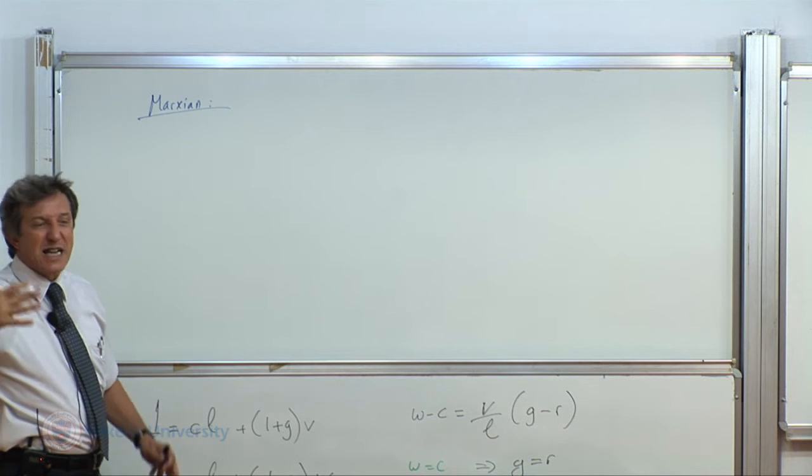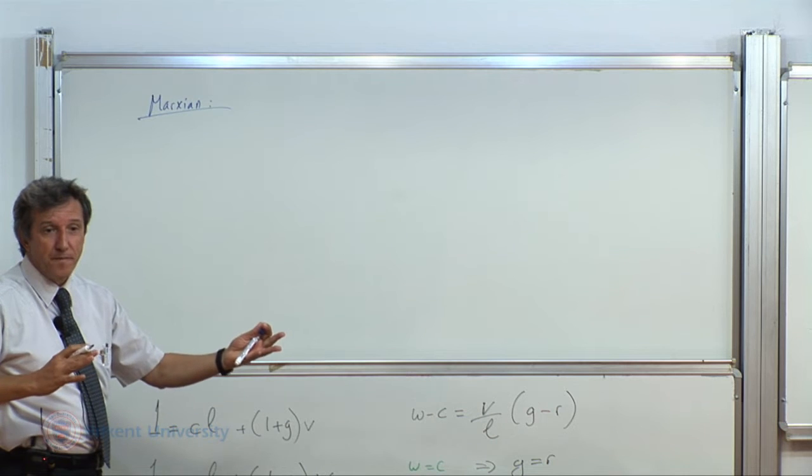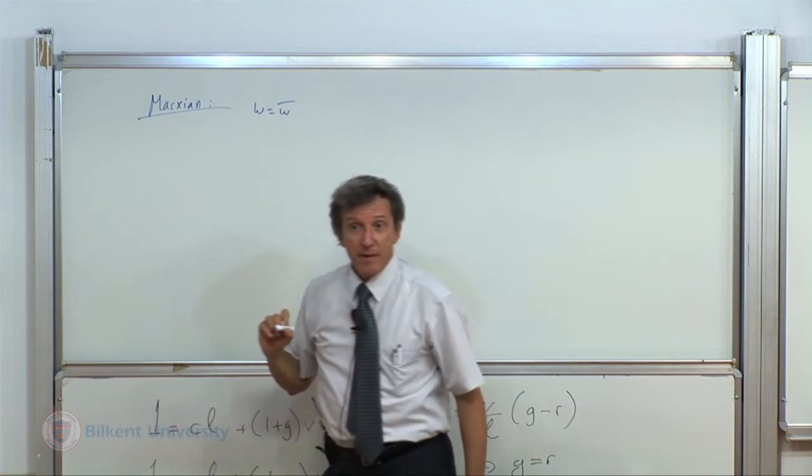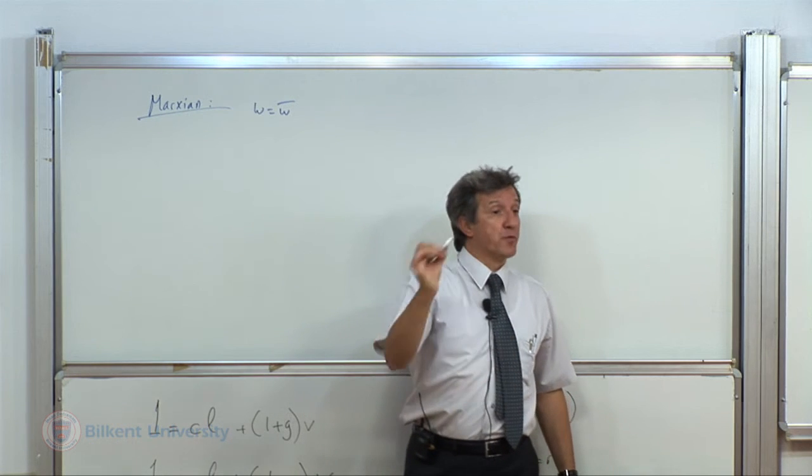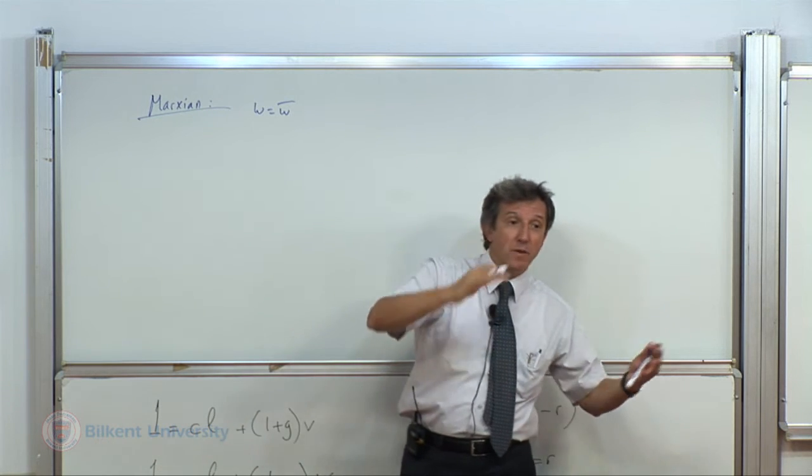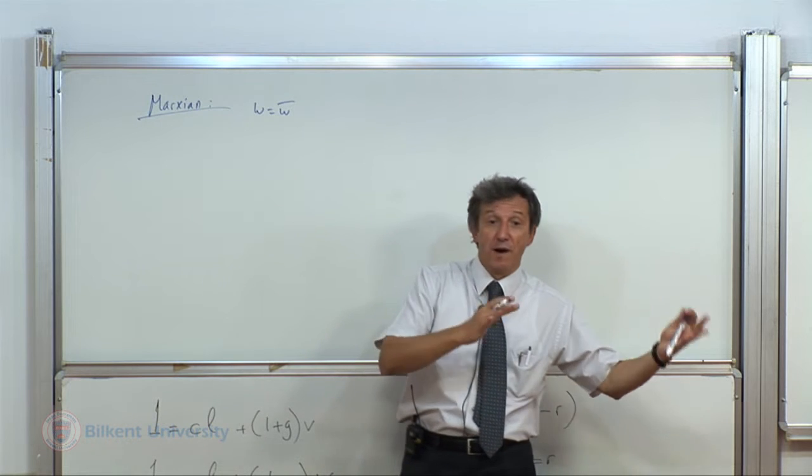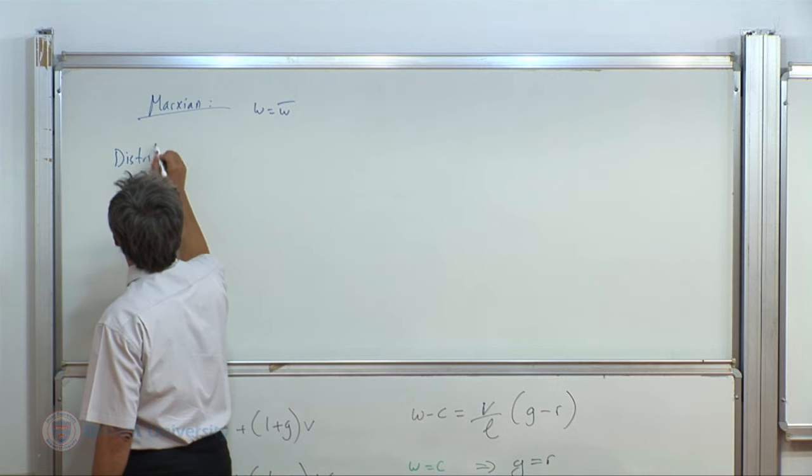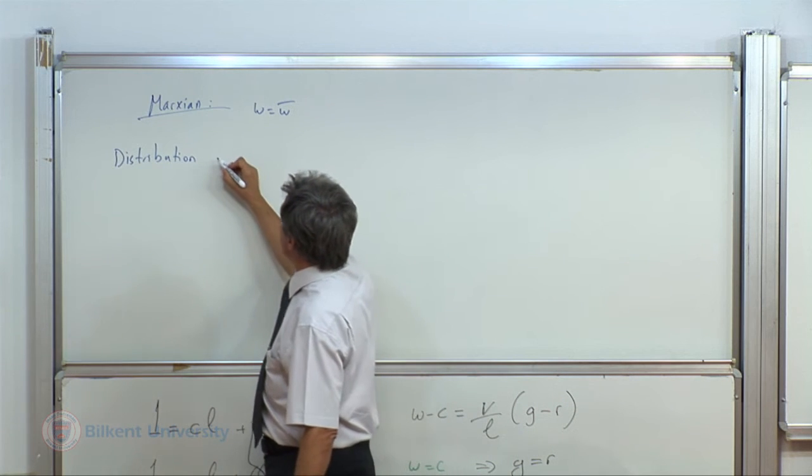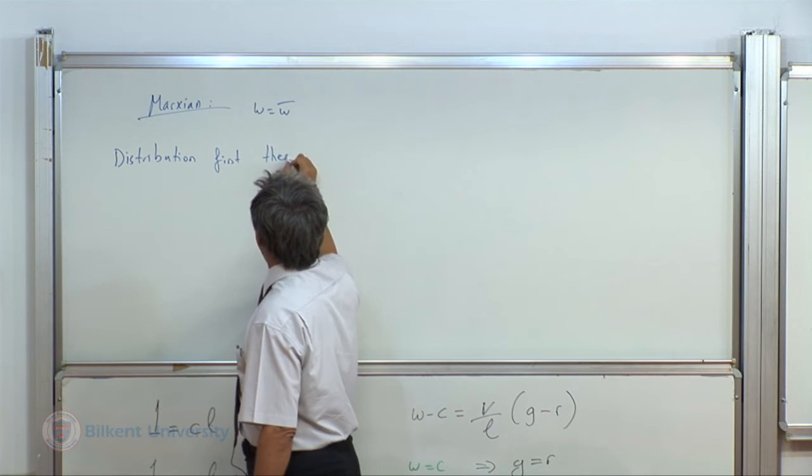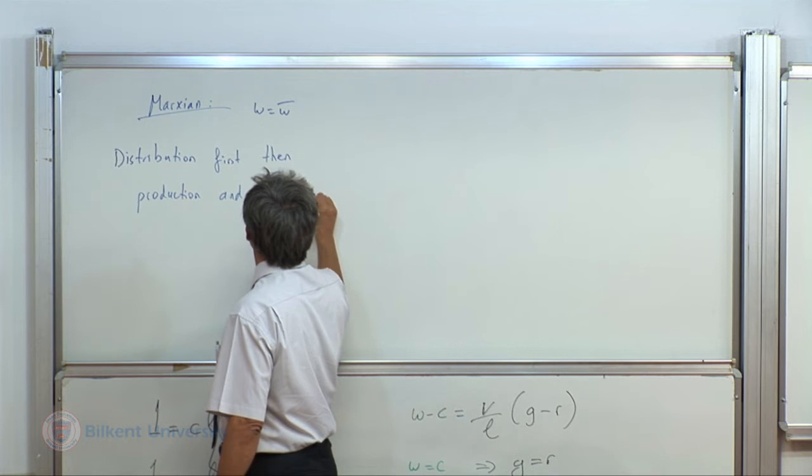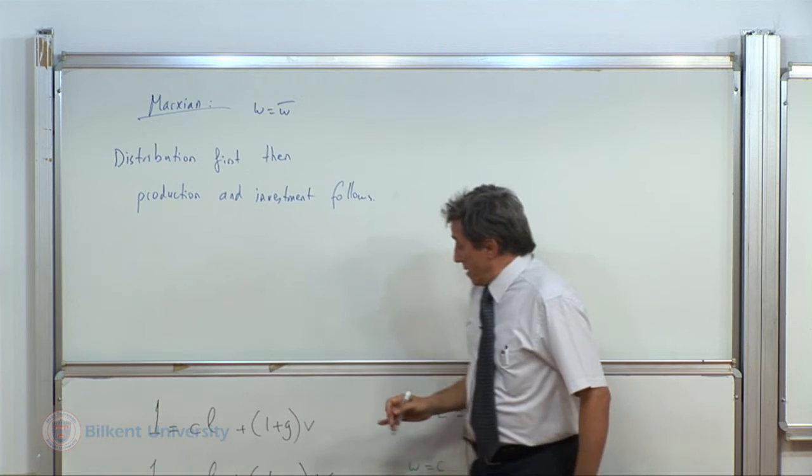Technology and production resolved first, distribution later. This is the neoclassical framework. On the other hand, Marxian framework argues that historically there is a class struggle and antagonism going on, and these historical conditions one way or another resolve and set the wage rate as given. Distribution is known prior to production. Before production the workers know how much they are going to be paid, then they go and start production and seeds and investment all follows later. So in Marxian analysis, distribution is resolved - profit rate and the wage rate is resolved first - then production and investment follows.